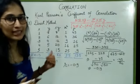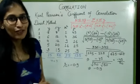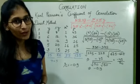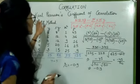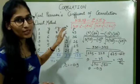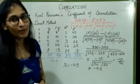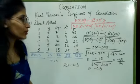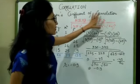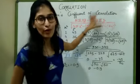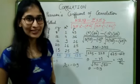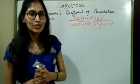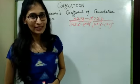So this is how we solve using Carl Pearson's coefficient direct method — you just have to remember this formula and you are done. Now let's discuss the assumed mean method.